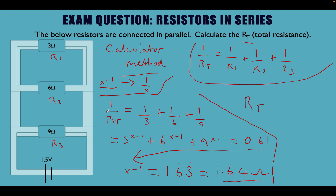When we write this out, we substitute our values into the formula: 1 over RT equals 1 over 3 plus 1 over 6 plus 1 over 9, taking the reciprocal of each resistor value. To keep it simple with the calculator method, type each resistor value with the reciprocal button: 3 x⁻¹ plus 6 x⁻¹ plus 9 x⁻¹ equals 0.61. But remember, we're not done — we have to press the reciprocal button one more time.